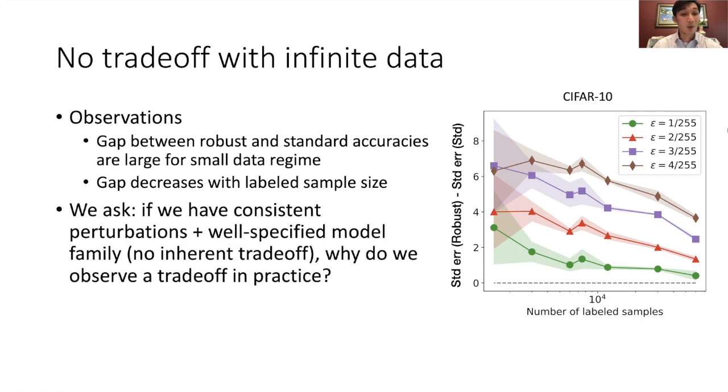In this paper, we ask if we assume that perturbations are consistent, and that the model family is well-specified such that there is no inherent trade-off, then why do we observe a trade-off between robustness and accuracy in practice?